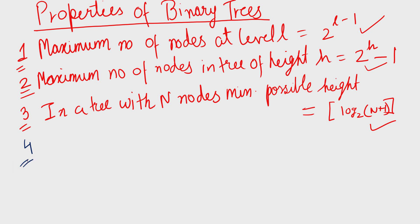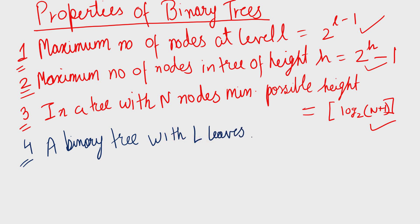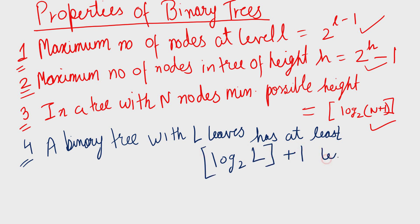Property 4: a binary tree with L leaves has at least greatest integer of log base 2 of L plus 1 levels. To explain this, let us say all the nodes are at the leaf level — that is, at the last level. In that case we have L is less than or equal to 2 to the power L minus 1.